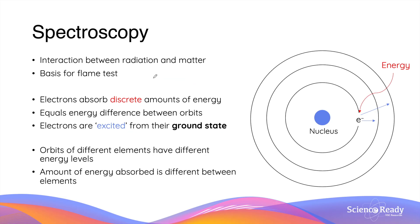Before we delve into the first test — the flame test — it is important to understand a concept called spectroscopy. Spectroscopy is the interaction between radiation, or EMR, and matter. This is the basis of how the flame test works. In spectroscopy, electrons can absorb a discrete amount of energy — a very specific amount — that equals the energy difference between the orbits.